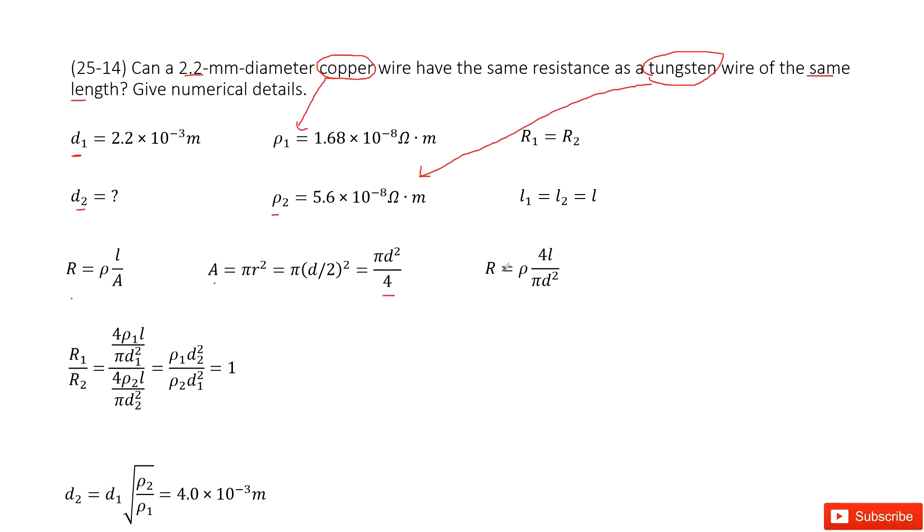Then when we input A inside, we can get the function for R with the quantities like rho L pi d squared, right? Yes. Now we can see.